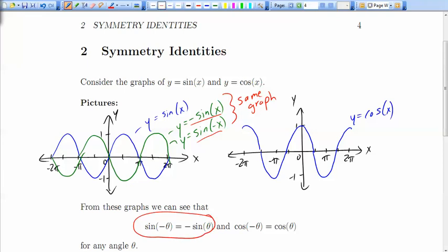Let's see what kind of information we get from reflecting the cosine graph. Well, take a look that if we reflect the cosine graph about the y-axis, we get the exact same graph. This is also y equals cos of negative x. Again, these two graphs are the same. And that means that cos of x is equal to cos of negative x.